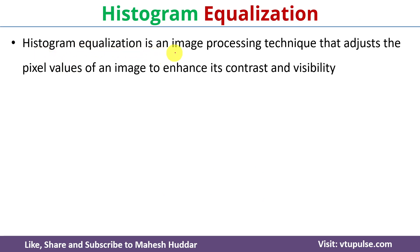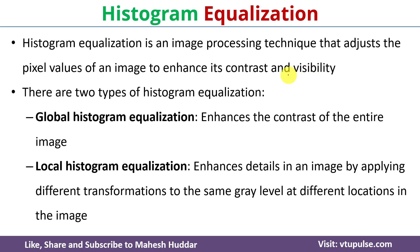Before we proceed, let's understand what histogram equalization is. Histogram equalization is an image processing technique that adjusts the pixel values of an image to enhance its contrast and visibility.